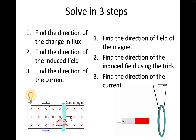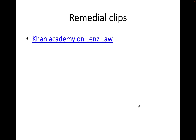So there are three steps to solve these problems. Step one: find the direction of the change in the flux — is it getting stronger or getting weaker? Step two: decide the direction of the induced field — is it in the same direction or the opposite direction? Step three: find the direction of the current using the right-hand rule to determine whether it's clockwise or counterclockwise. This applies to a rail, a magnet, or anything like this. There's also a nice remedial clip on Lenz's Law that you can watch.